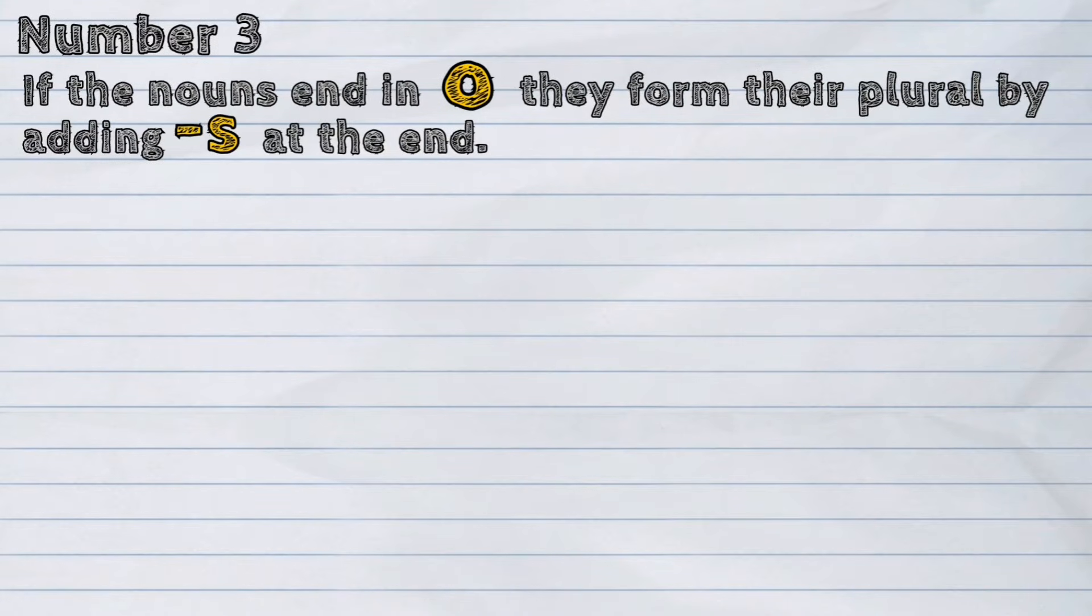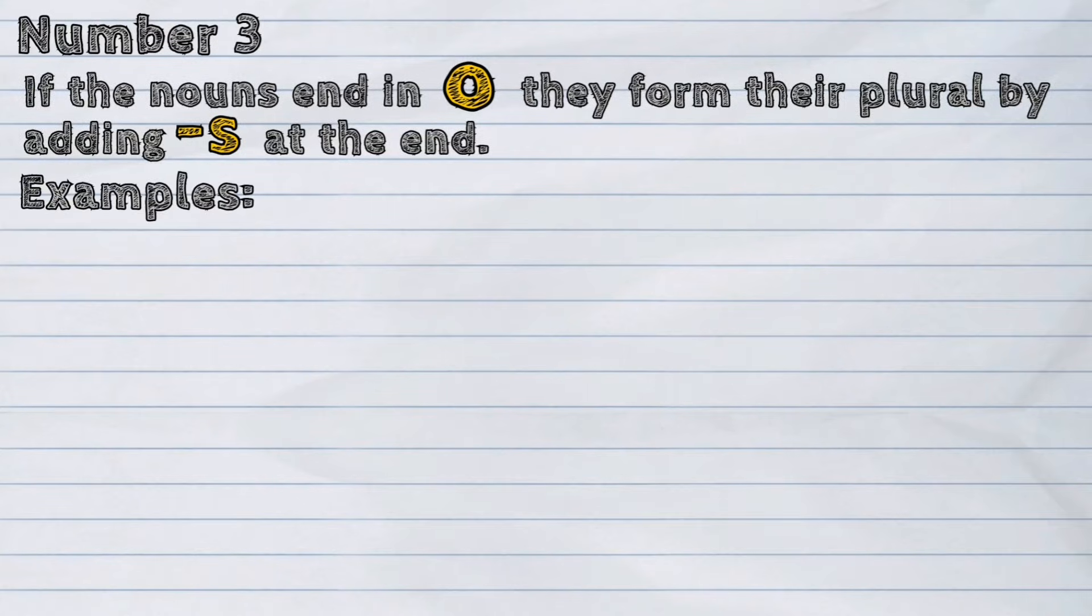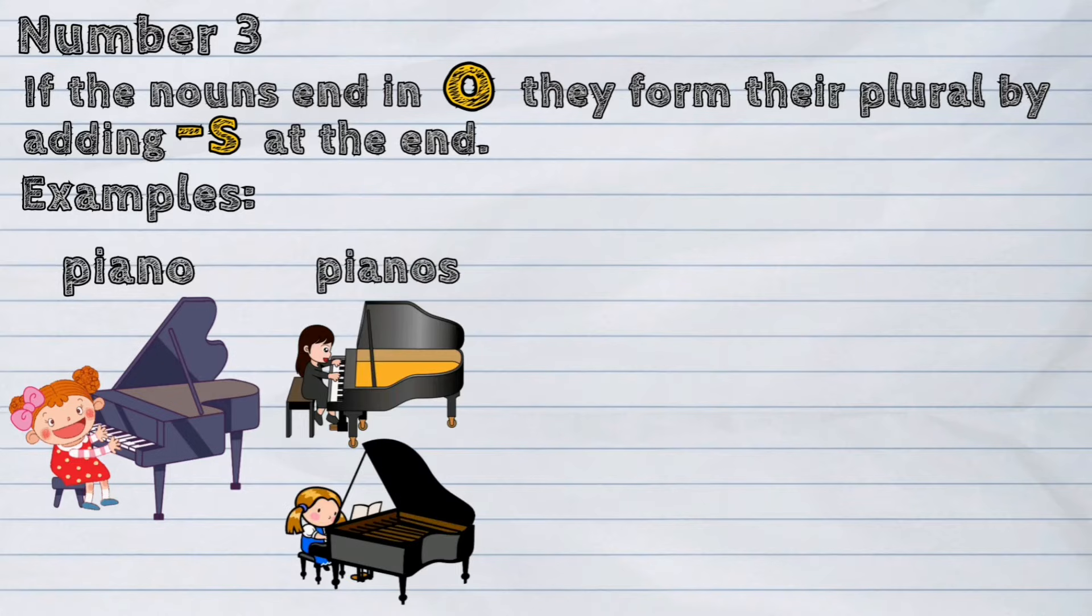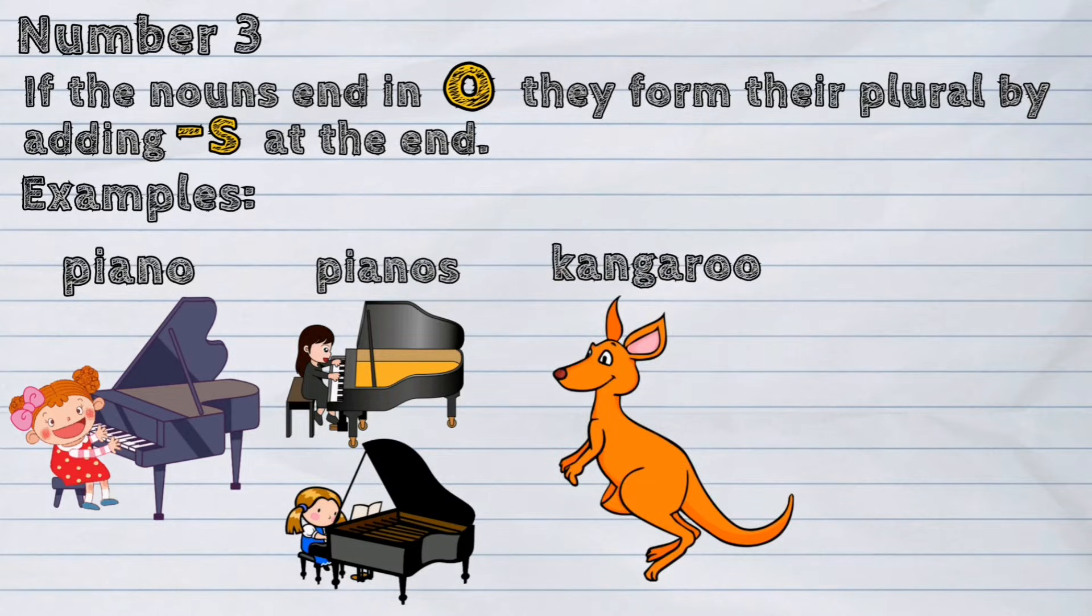Number three. If the nouns end in 'o', they form their plural by adding 's' at the end. Examples: piano, pianos; kangaroo, kangaroos.